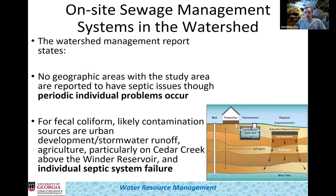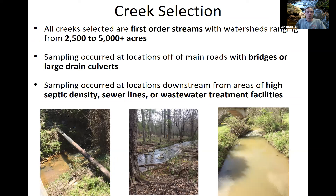The creeks I selected are all first-order streams ranging from about 2,500 to over 5,000 acres, giving a good range of sizes. Sampling occurred off main roads with bridges or large drain culverts to standardize roadside inputs across all creeks. Sampling locations were downstream from areas of high septic density, sewer lines, or wastewater treatment facilities.